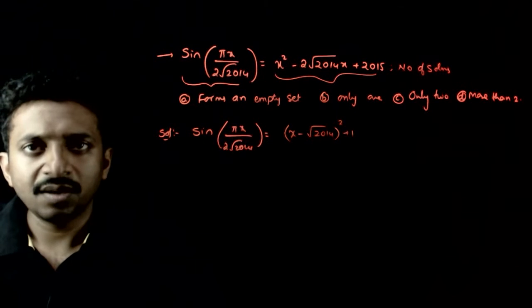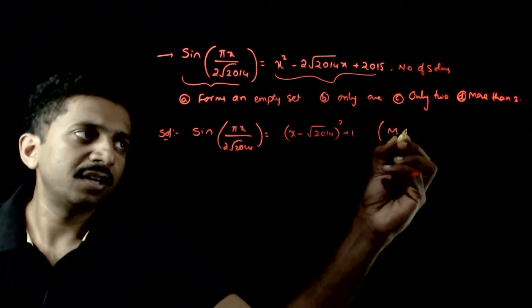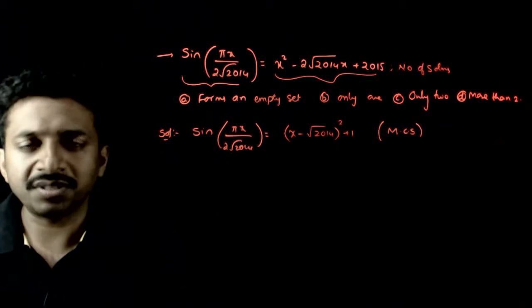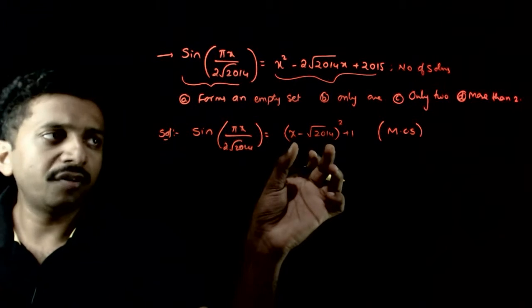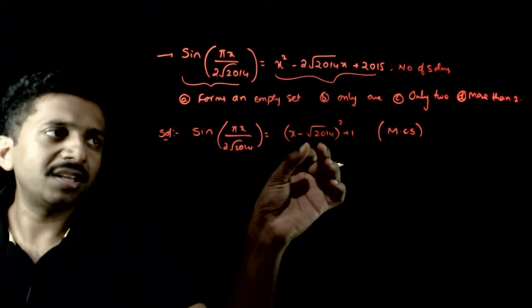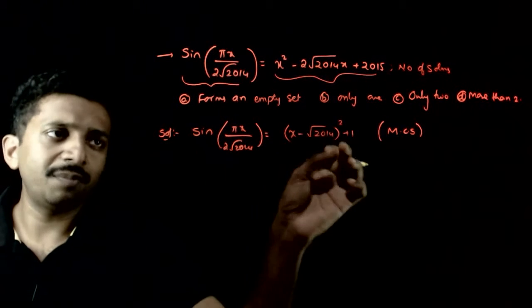Just like this method of completion of squares (MCS). So (x - √2014)² is x² - 2√2014·x + 2014. We have 2015 plus 1.